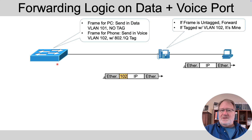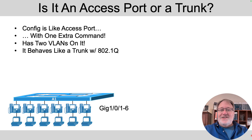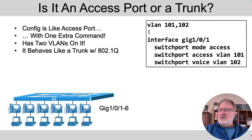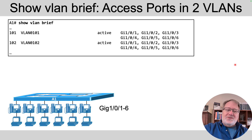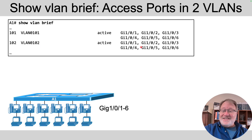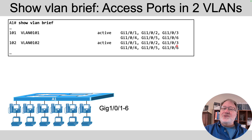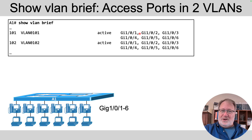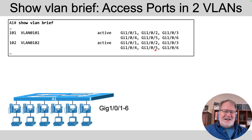It's really the show commands that reveal the whole question of whether this is an access port or a trunk port. Here's one more look at the config with access VLAN 101 and voice VLAN 102. The 'show vlan brief' command shows VLAN 101 with those six ports (one through six) and then shows VLAN 102 with the same six ports. As a review, 'show vlan brief' normally shows access ports only in their respective access VLANs. Here it's a little weird because the ports show up in two VLANs — the data VLAN and the voice VLAN.